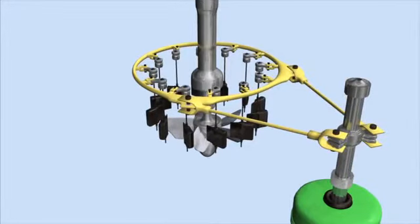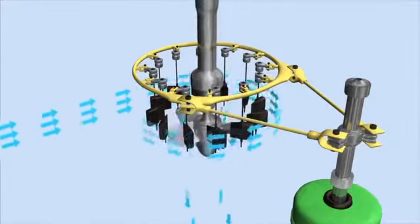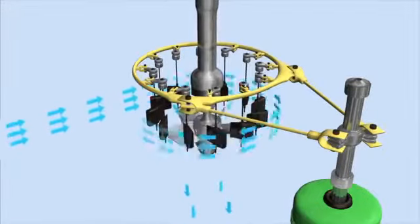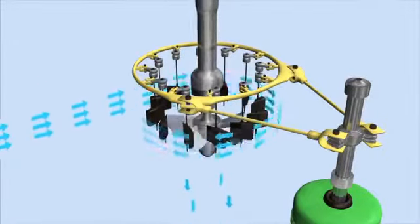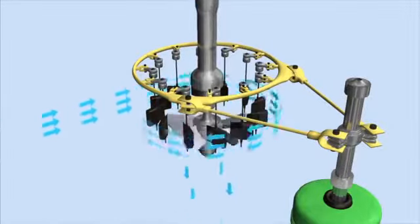The volute of the turbine increases the velocity of flow and the pitch vanes direct the water at the appropriate angle towards the runner. The runner, and therefore the axle, is rotating, creating electrical energy through the generator.